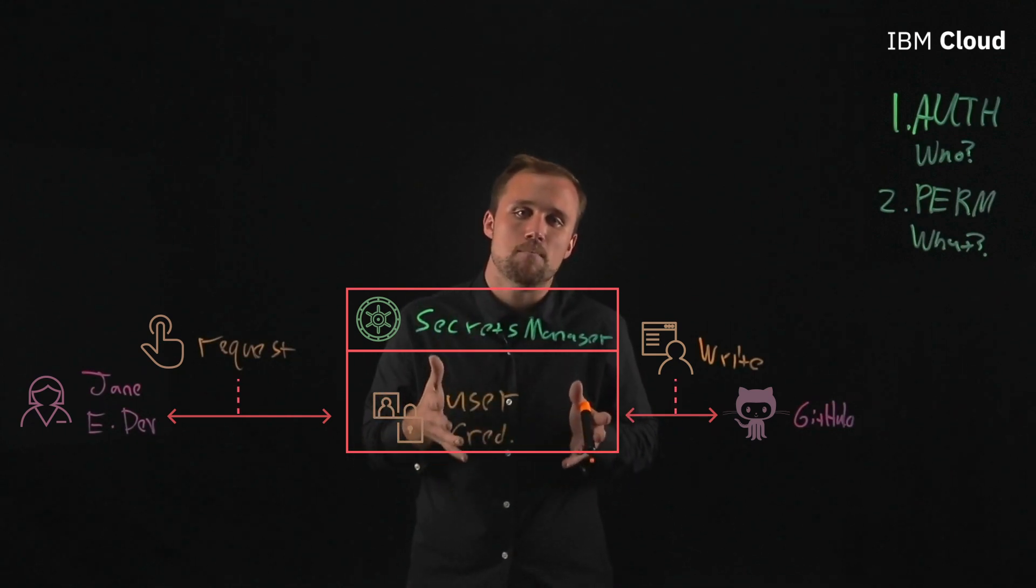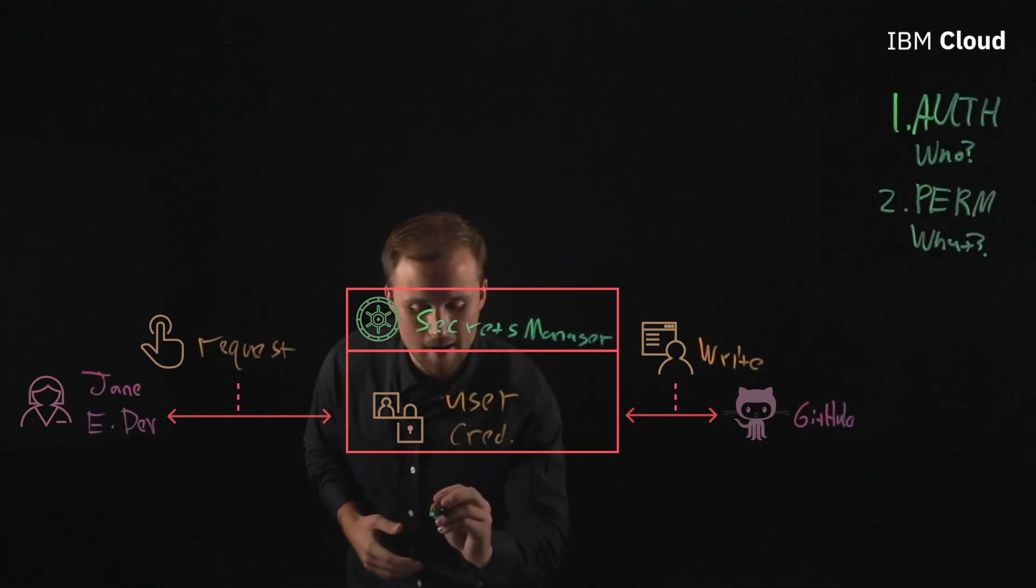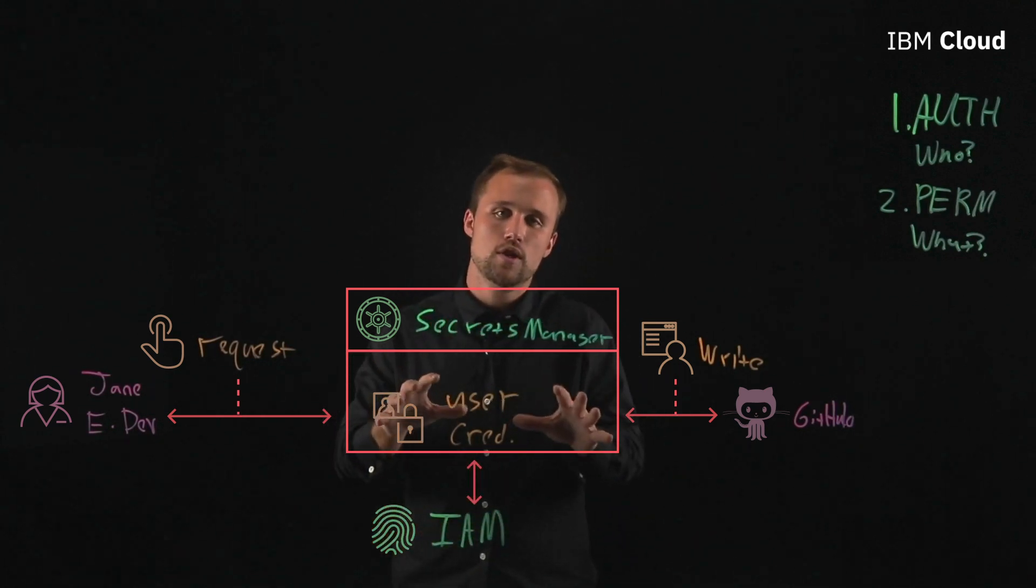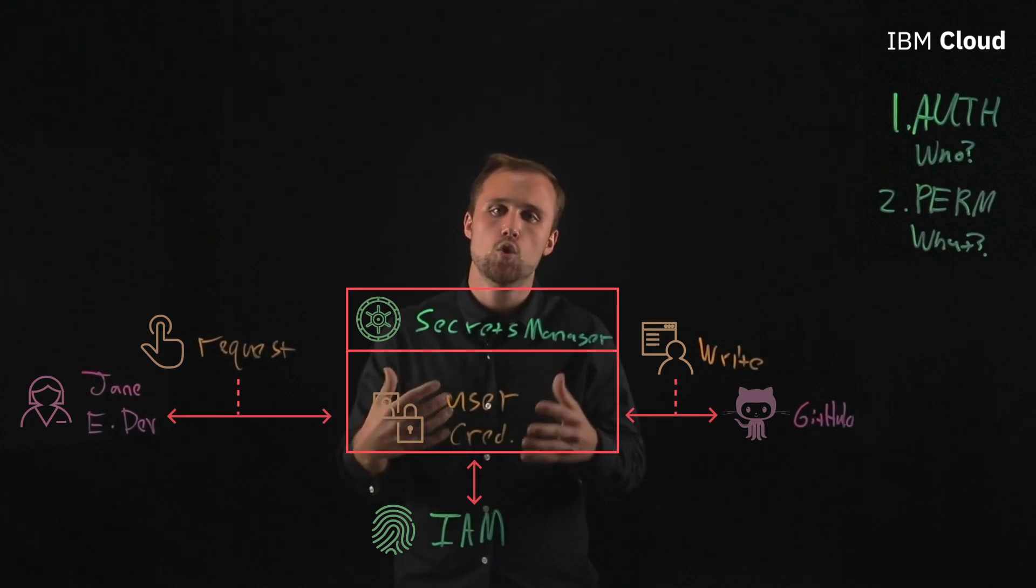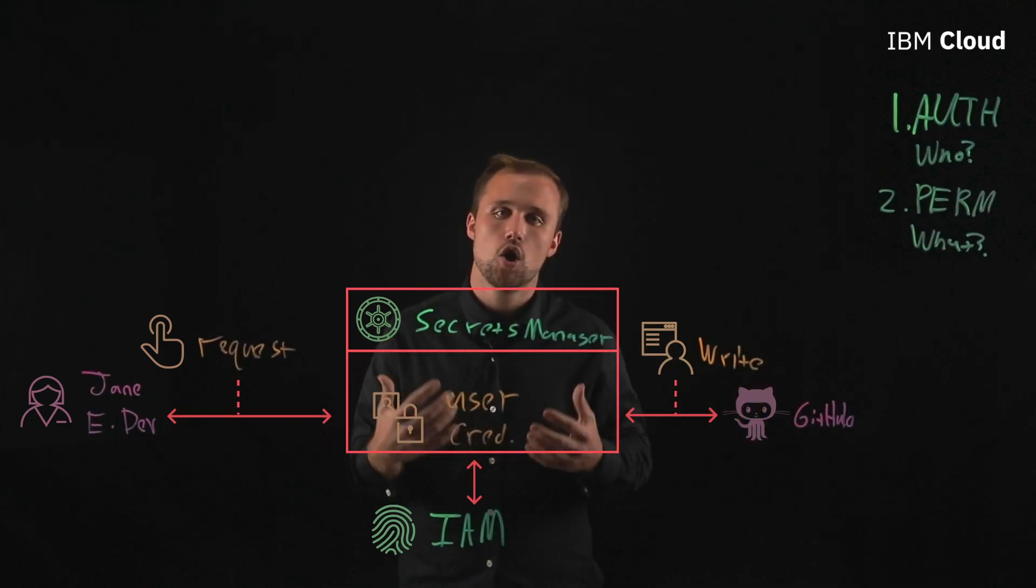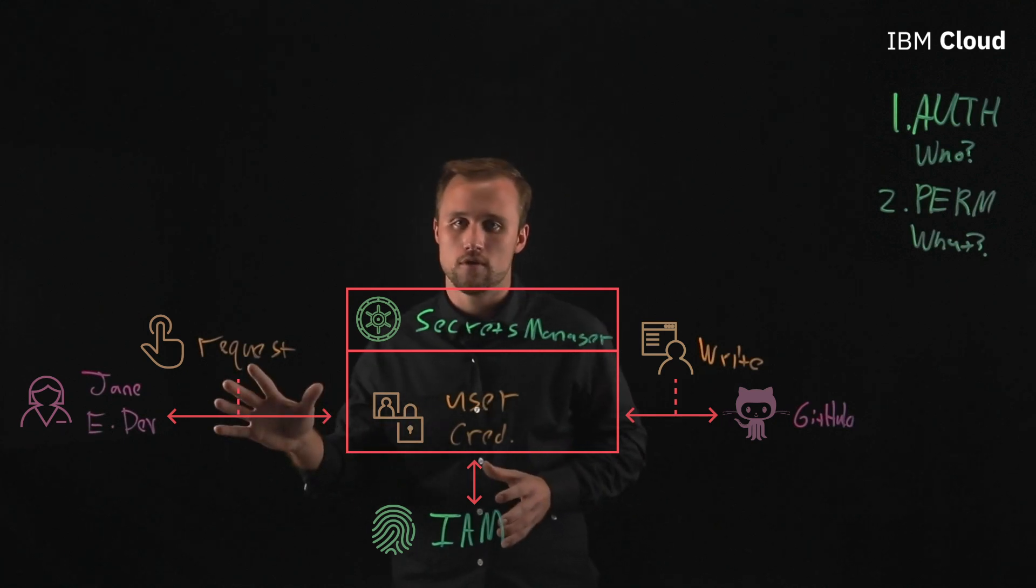However, what's really important for a secrets manager service to do is interact with the cloud service provider's IAM, our identity and access management service. So this IAM is going to be the source of truth, allowing secrets manager to one authenticate who she is so that it can pass it down to GitHub. And secondarily also allow for her to get the right set of roles based on the paradigm that they have within their IAM service.